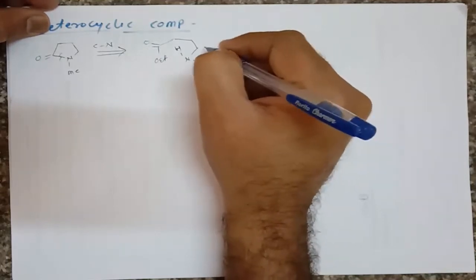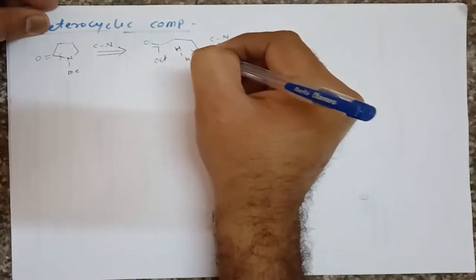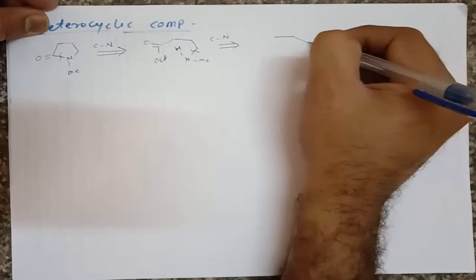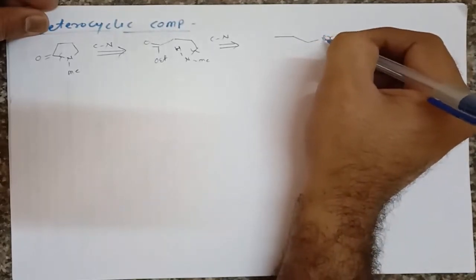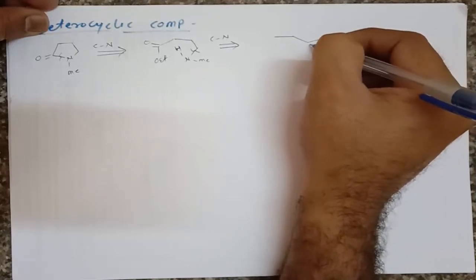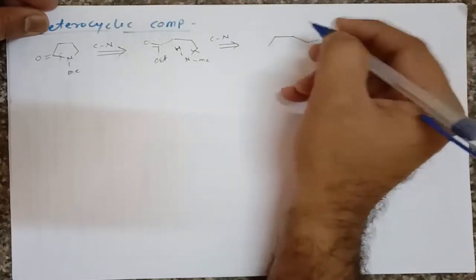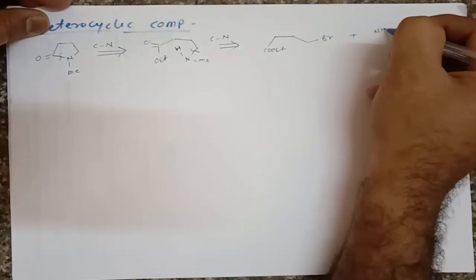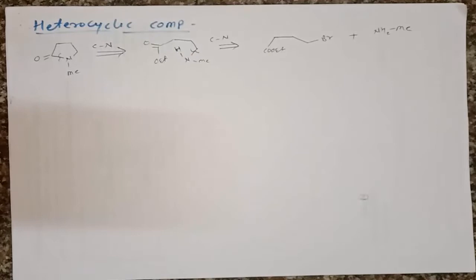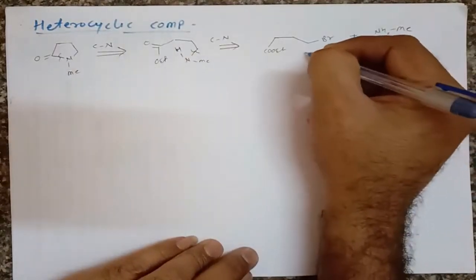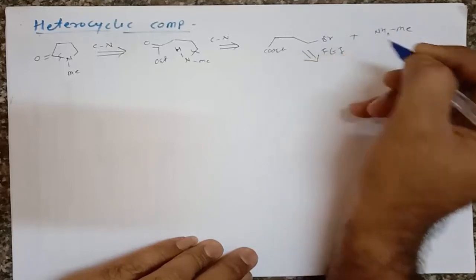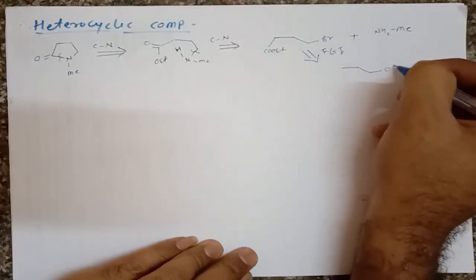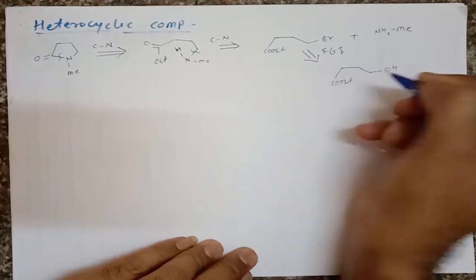This molecule again contains a C-N bond. That means we can break this bond and here we can take an electron-withdrawing group so that it can be easily removed. This is an electron-withdrawing group, and if the amine attacks on this carbon the bromine will leave, and the remaining functional group will be the same — that is COOEt — along with formation of methylamine. Then secondly, this molecule can be prepared by functional group interconversion; that means this bromine can be converted into an OH.